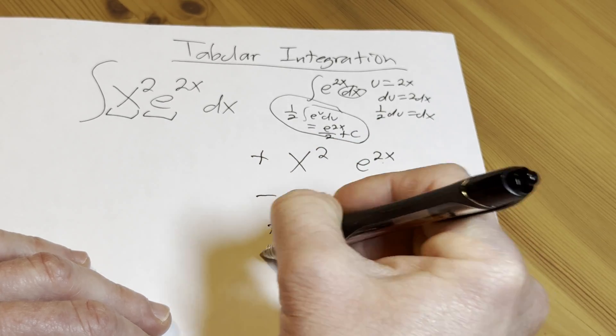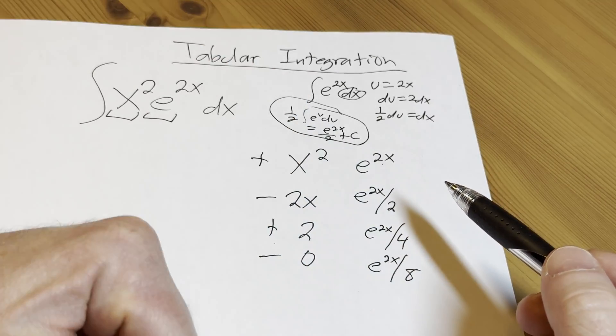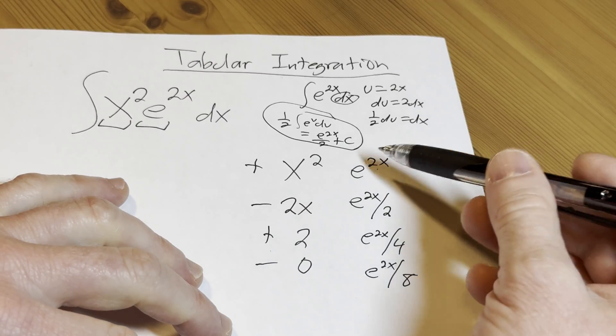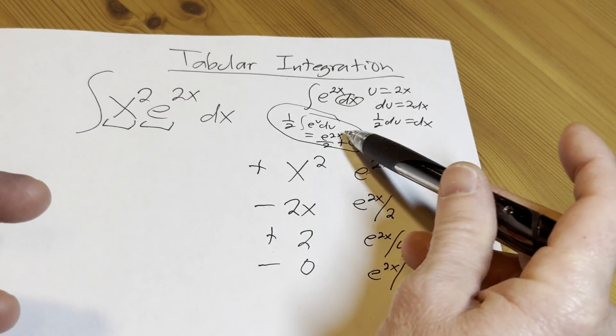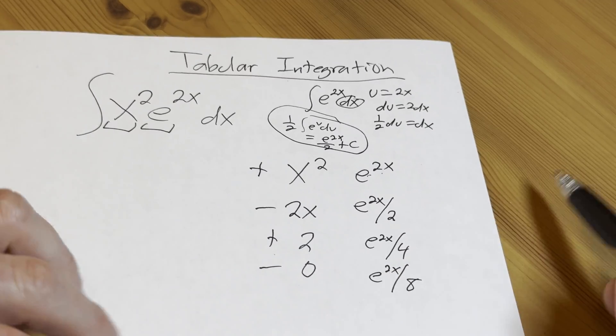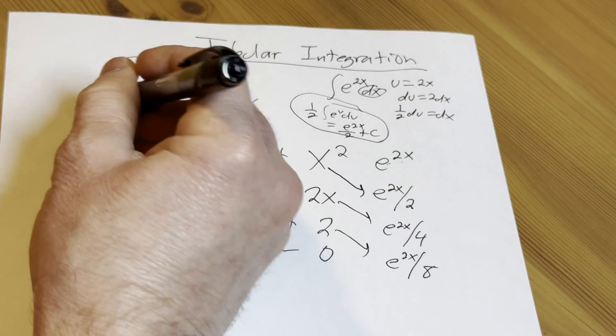Start with the plus, always plus minus plus minus. So again, you pick the factor that you can differentiate, just differentiate using the power rule, and then you integrate this. Just repeated differentiation—in this case it's super easy because it's e to a number times x, so you can just divide by that number. Then you just draw arrows, follow the arrows, and that's going to be the answer.